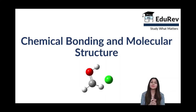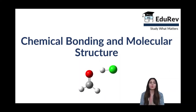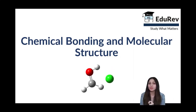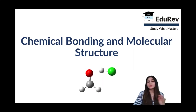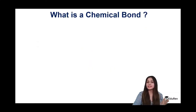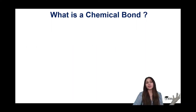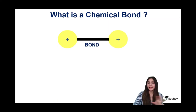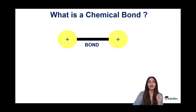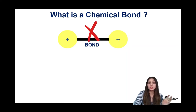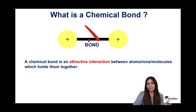Hi everyone, welcome back to another video. In today's video I'm going to be talking about what is a chemical bond and what are the different types of chemical bonds. The first and most inevitable question is: what is a chemical bond? As a student of class 11th chemistry, I would picturize a chemical bond as some solid interaction joining two different atoms together, but that is not true. A chemical bond is not a solid entity.